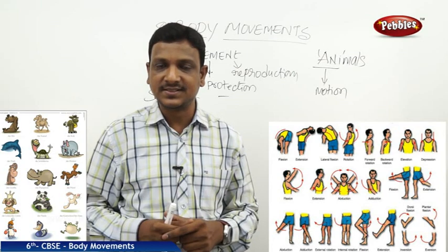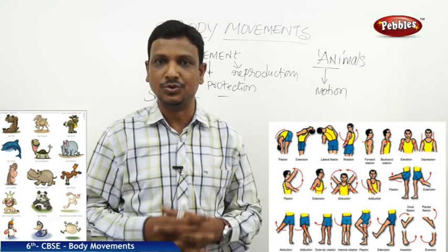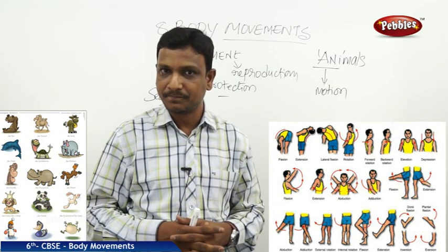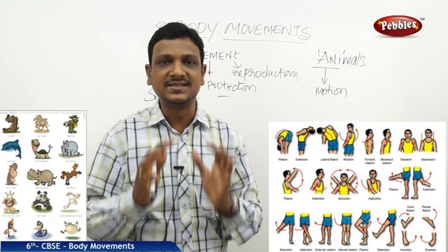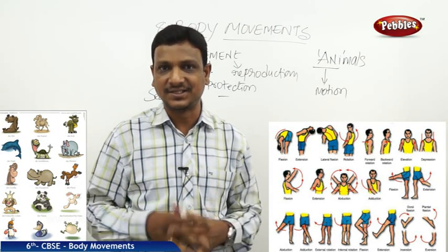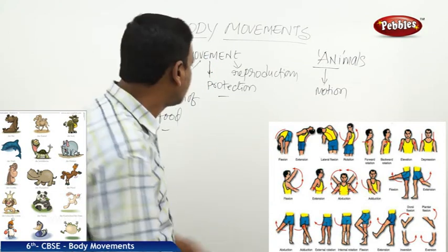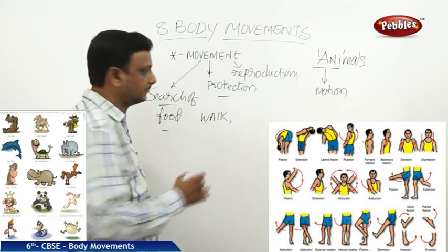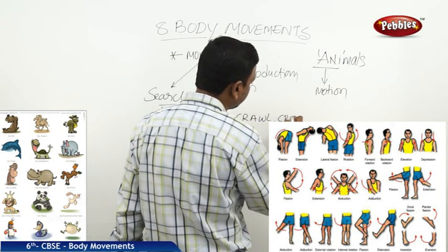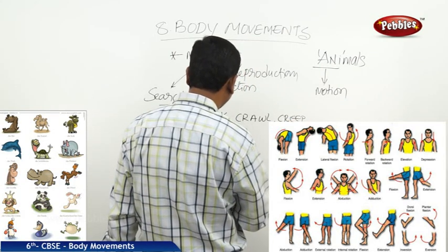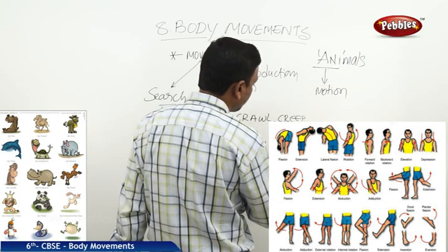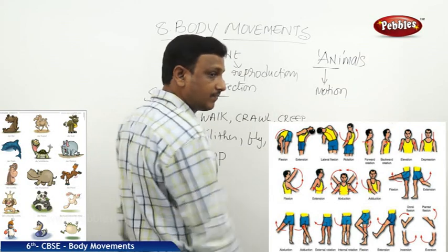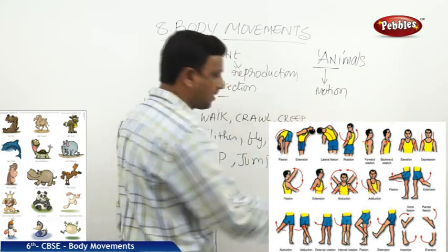It all depends upon the parts they use for movement. Some use wings, some use legs, some use body scales like a snake or worm — they use their body scales to move on the ground. Some animals have strong legs and some have very weak legs. The types of movement include: walk, crawl, creep, slither, fly, swim, hop, and jump.